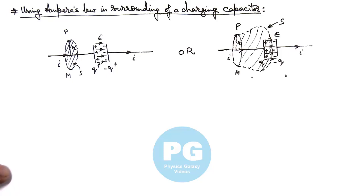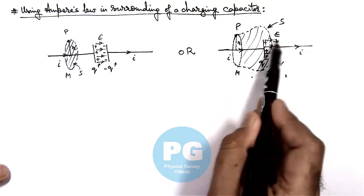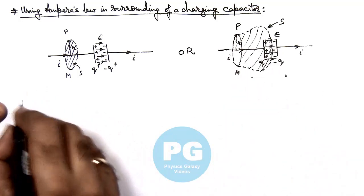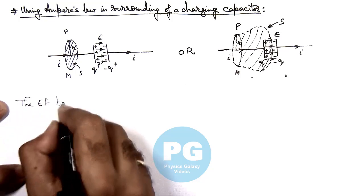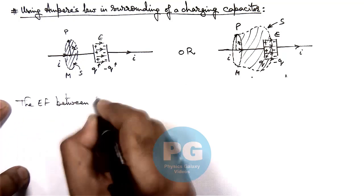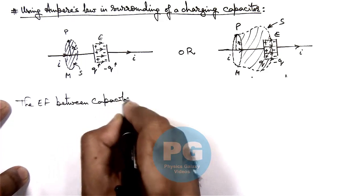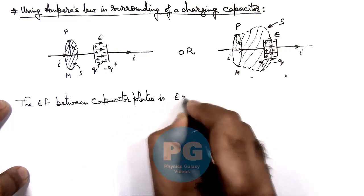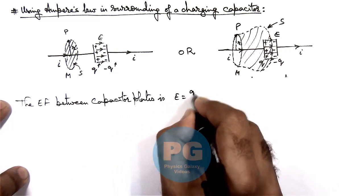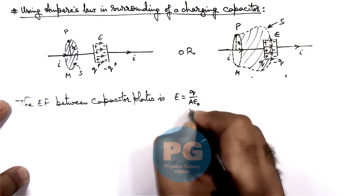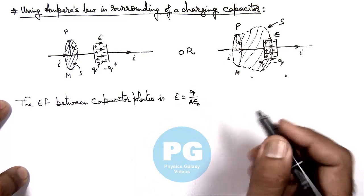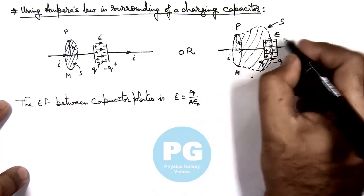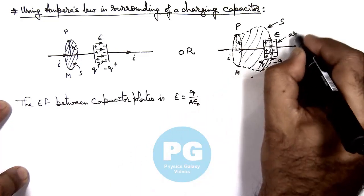This electric field is also changing as the charge is increasing. This time-varying electric field intercepting surface S must be accounted for in order to make the two results consistent. To keep consistency between the two results, we must account for this electric field intercepting surface S.